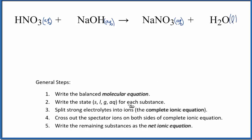So now that we have the states, we can split the electrolytes, the strong electrolytes, into their ions to give us the complete ionic equation. To do that, we need to know the charge on them. We can use the periodic table to help us with that.